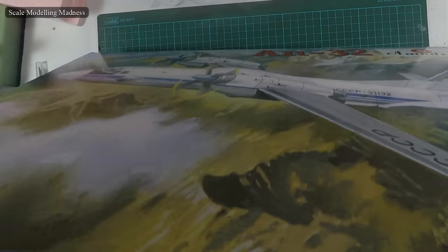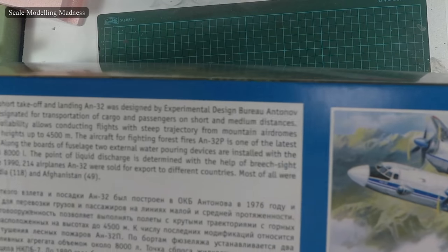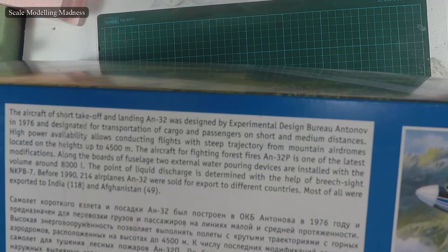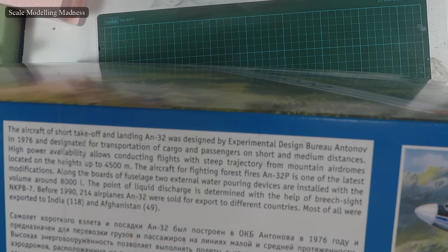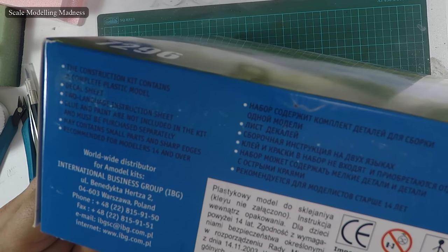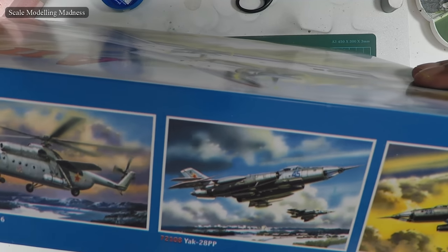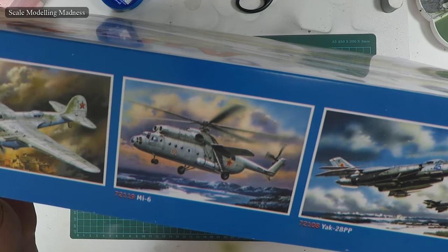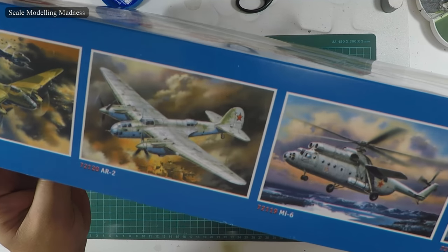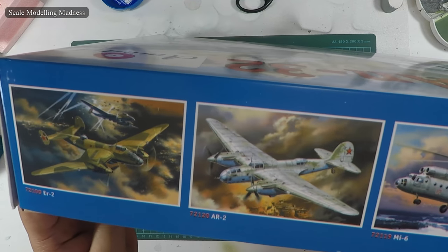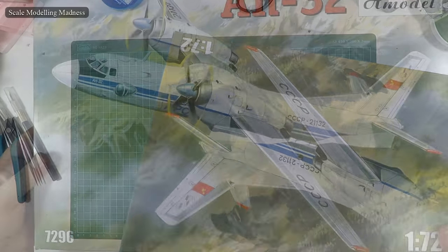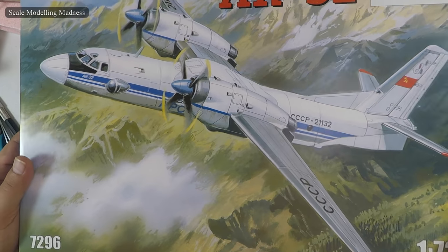It's a rather big box. On the side some brief notes about the AN-32 and the address of the distributor which is in Poland. A-model itself I believe is a Ukrainian company. On the other side pictures of some other models available from the same manufacturer.